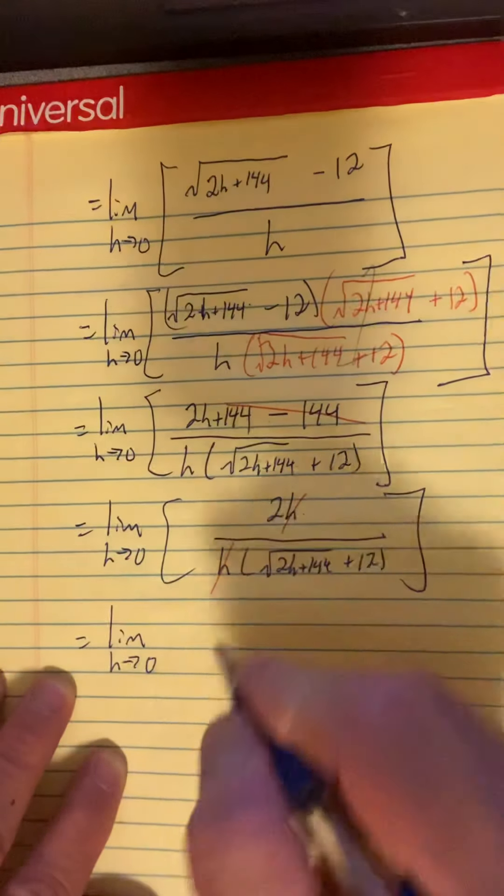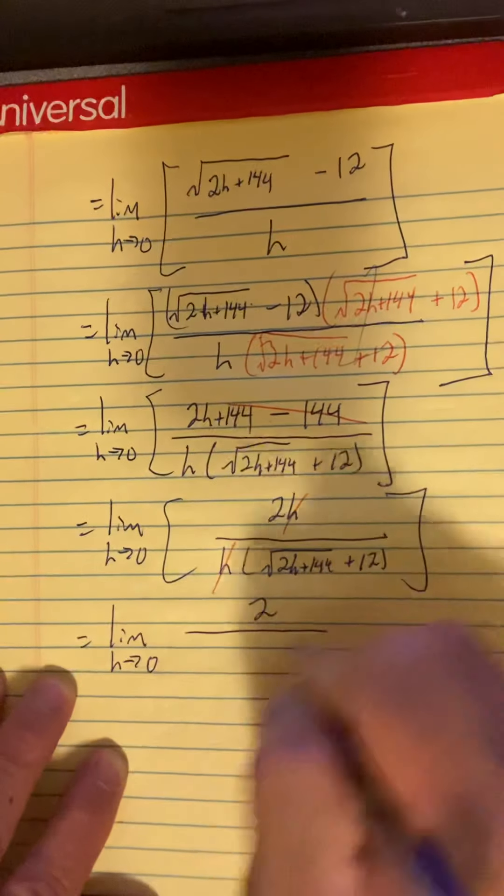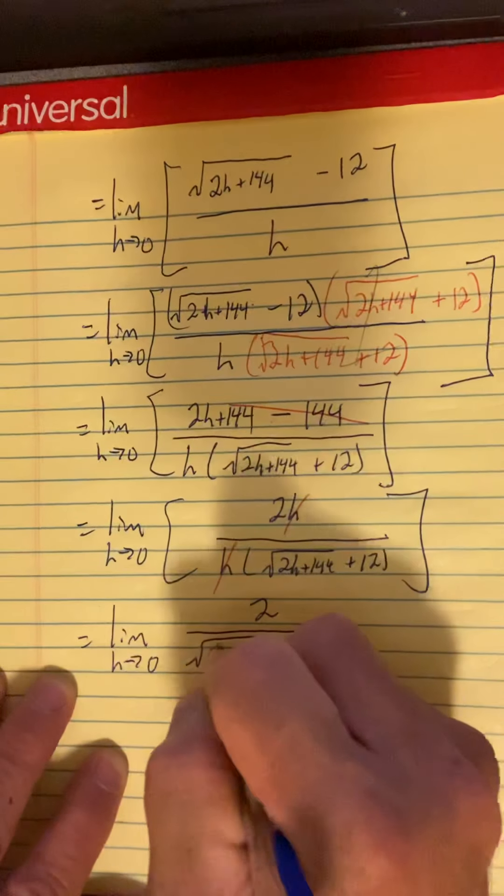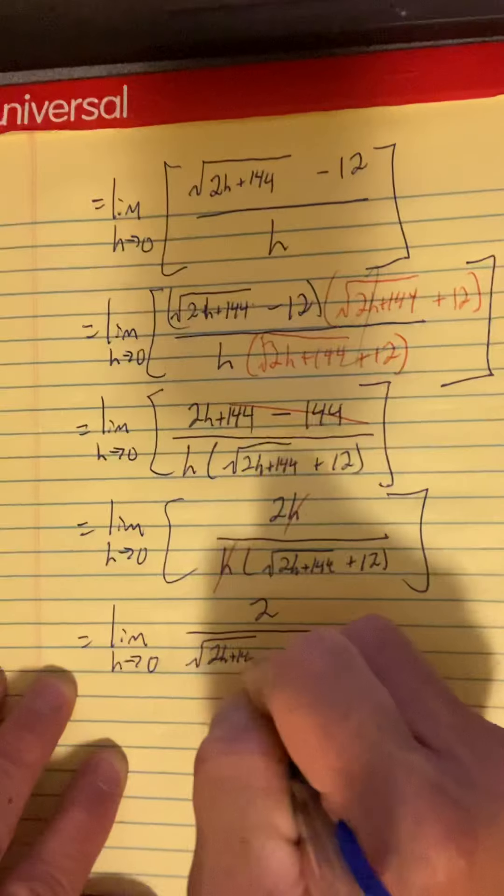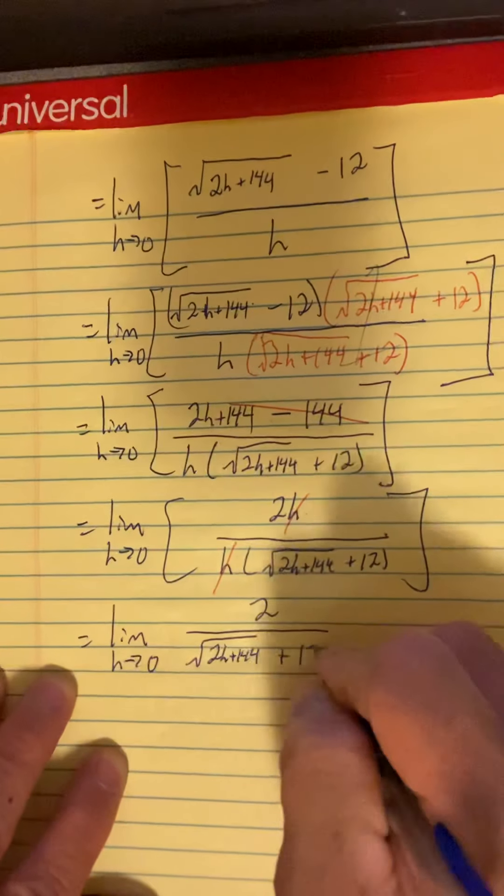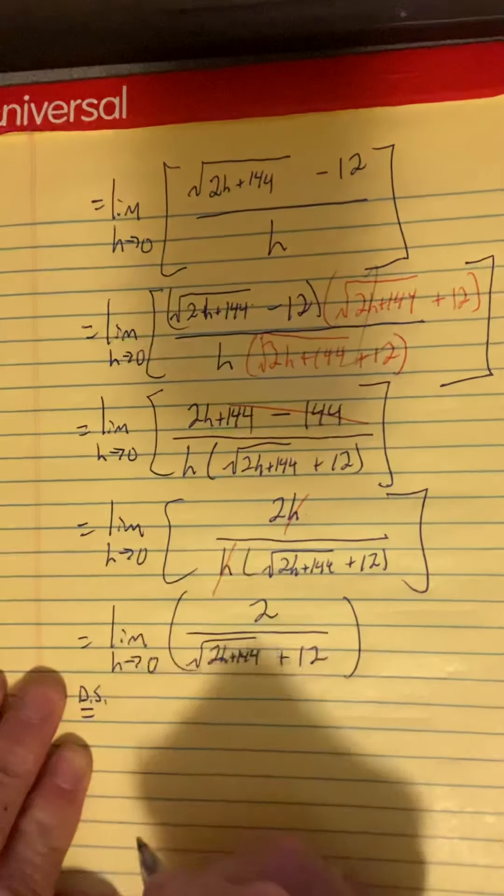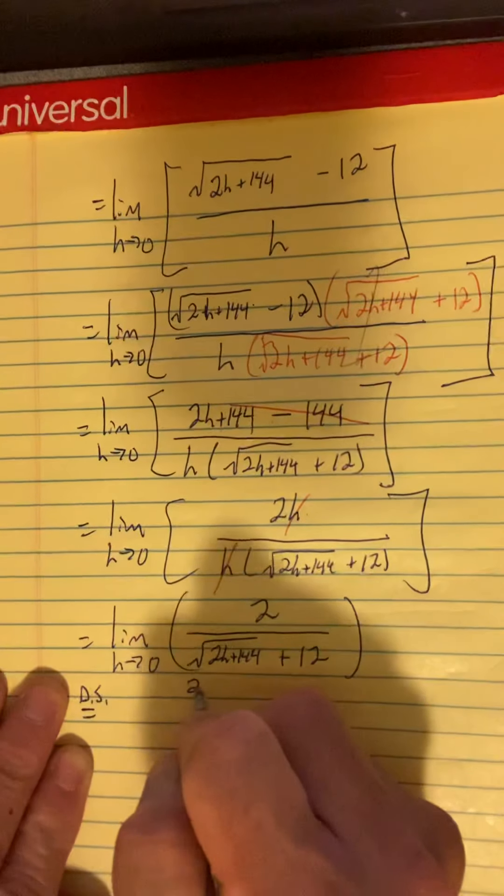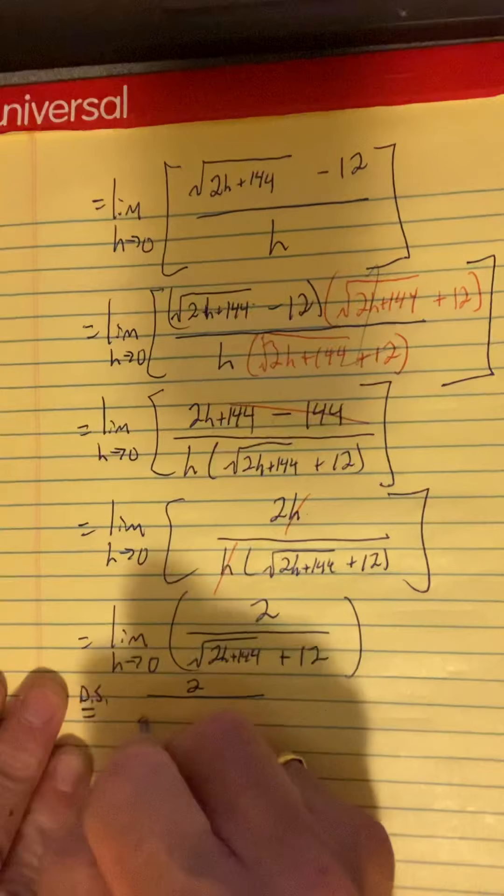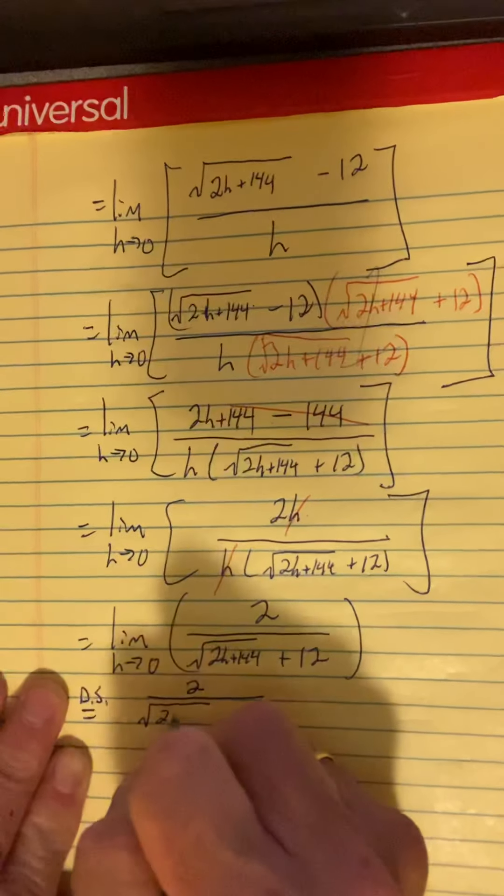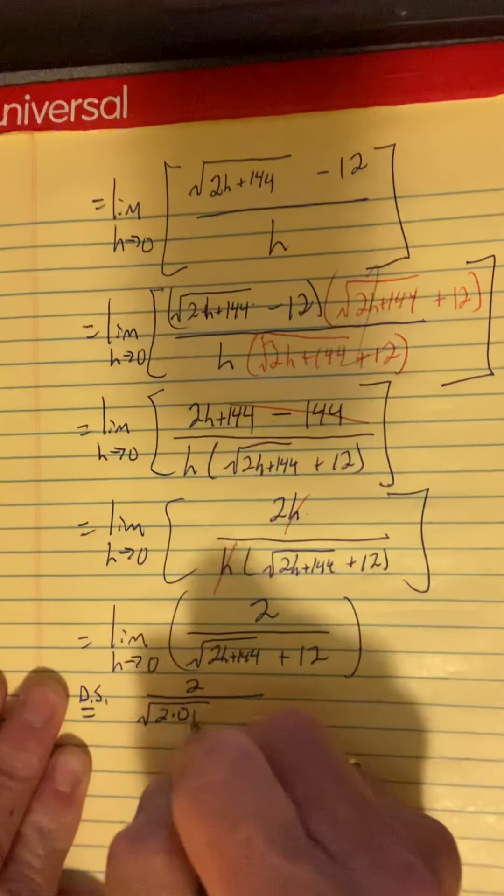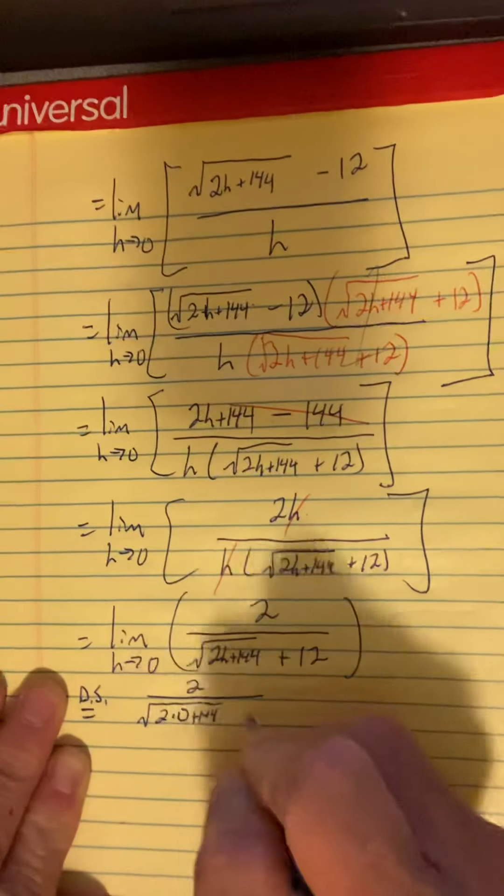So now we've gotten rid of the h in the denominator that was causing us so much consternation that we couldn't direct substitute. We have two over the square root of 2h plus 144 plus 12. And we can just direct substitute. That's what we'll do. DS for direct substitute.